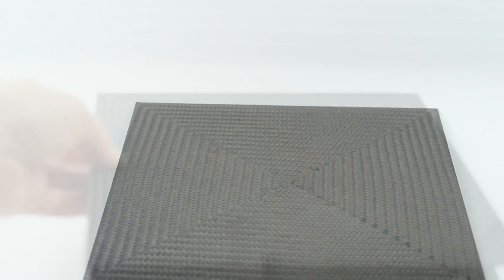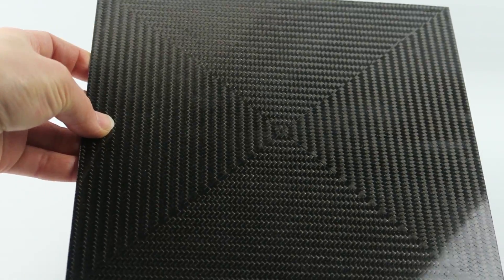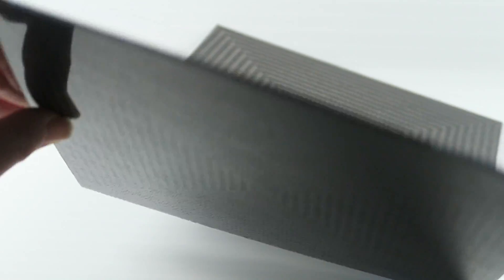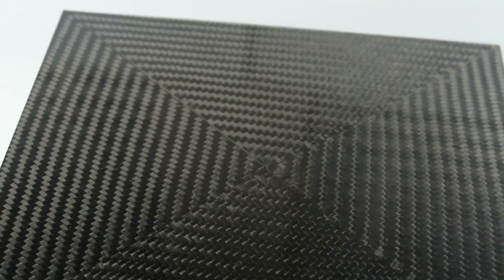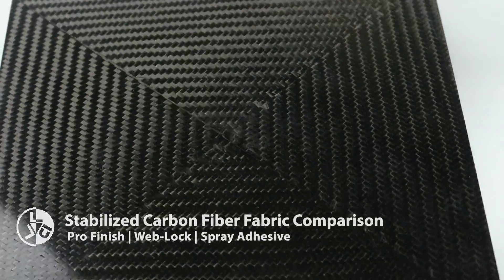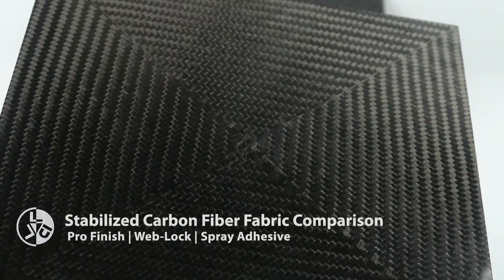In this video, I'll be working with stabilized carbon fiber fabrics. The goal with stabilization is to have a fabric that is easier to work with, that doesn't fray or deform as much while cutting and placing pieces. I have two commercially available options: ProFinish and WebLock, and I'm going to compare that to an application of spray adhesive and see what results we can get from each option.